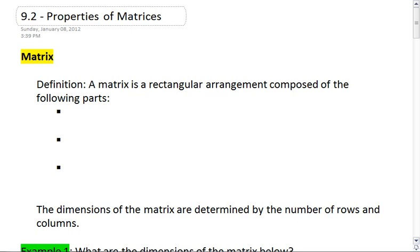Section 9.2, Properties of Matrices. First, let's look at a matrix. A matrix is a rectangular arrangement composed of the following parts. We're going to have rows, columns, and elements.